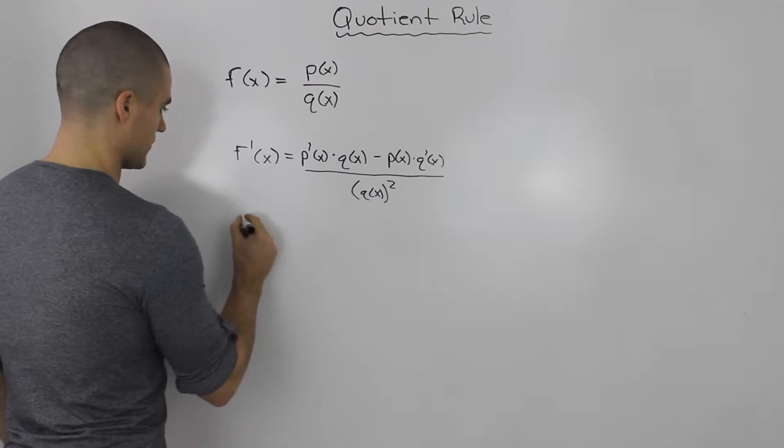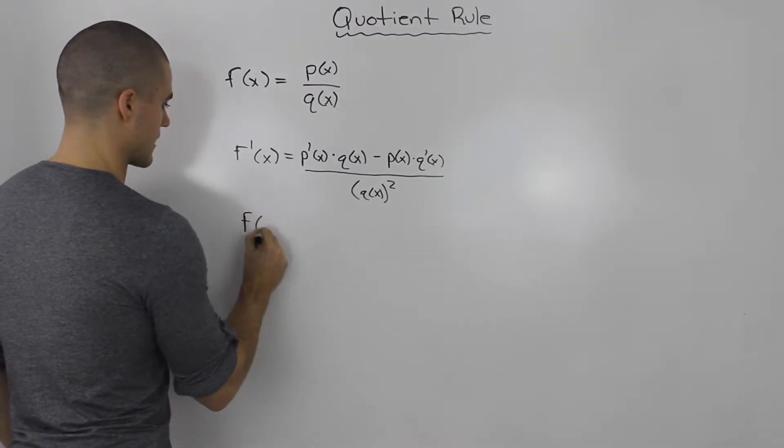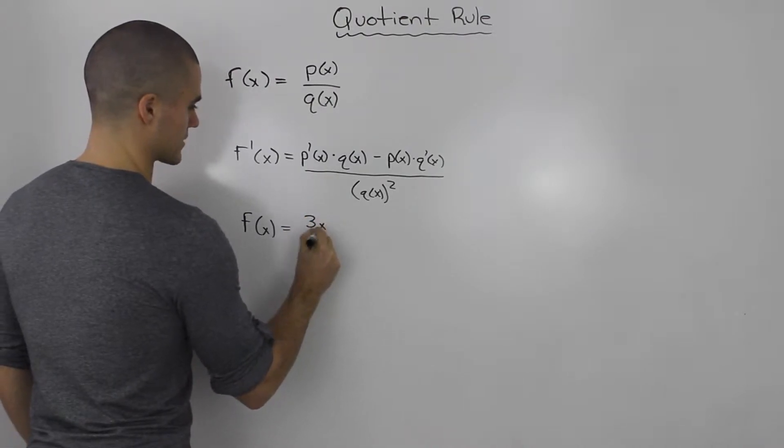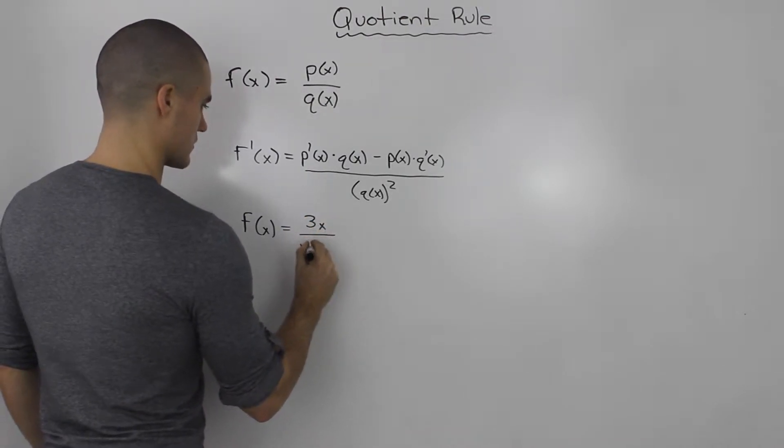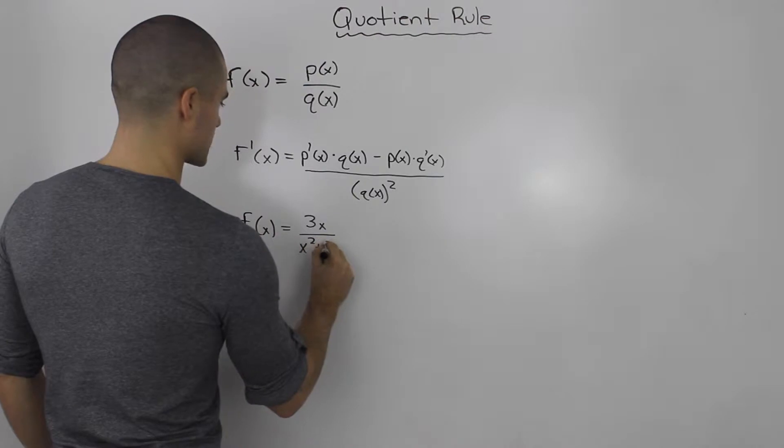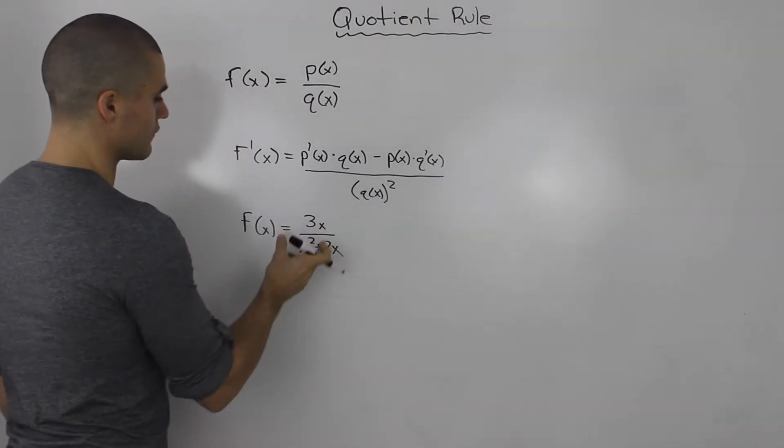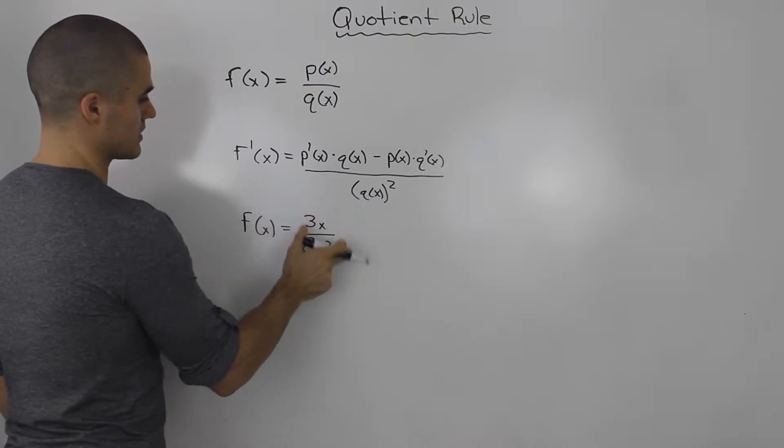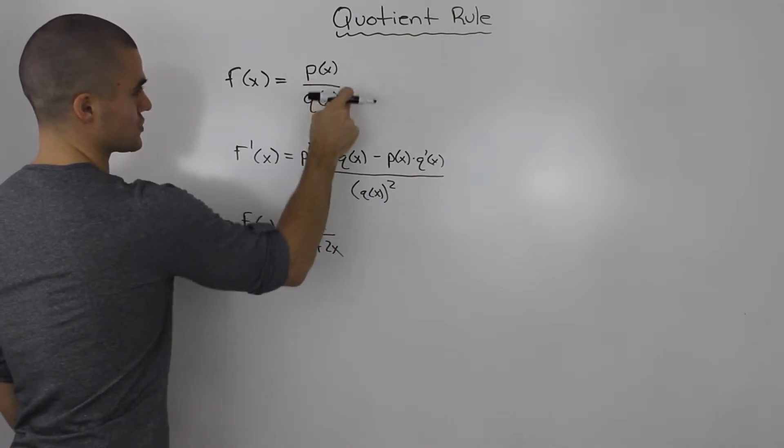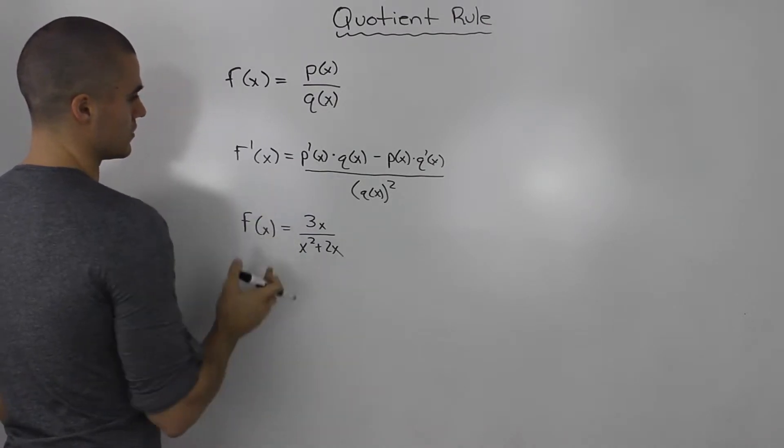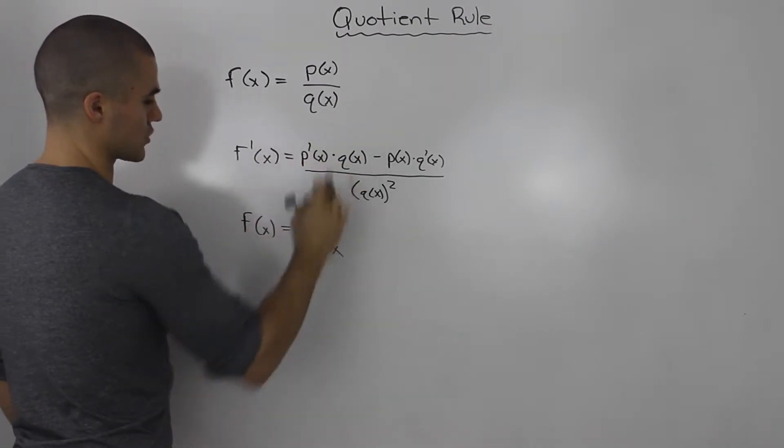Let's do an example. Say I'm given a function: 3x over (x² + 2x). Since you have a function in terms of two separate functions - 3x and x² + 2x - to get the derivative, we can use the quotient rule.